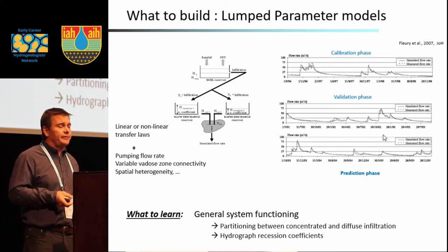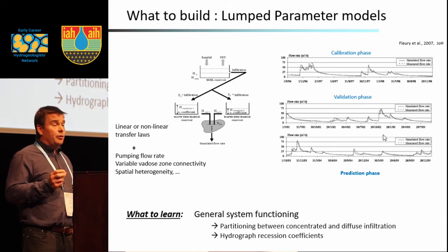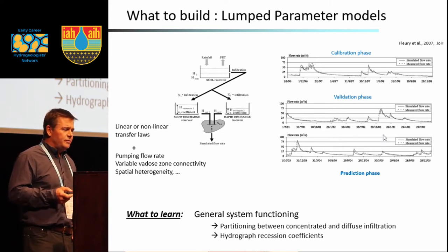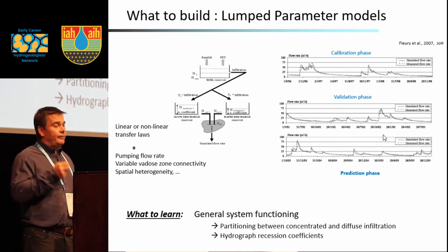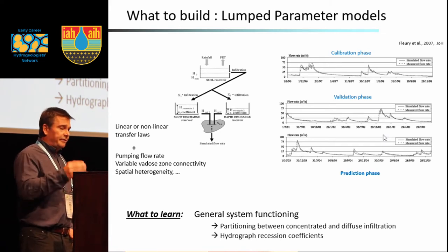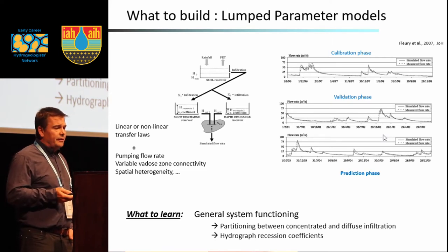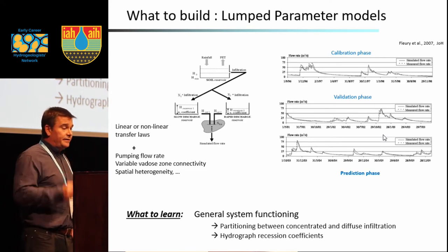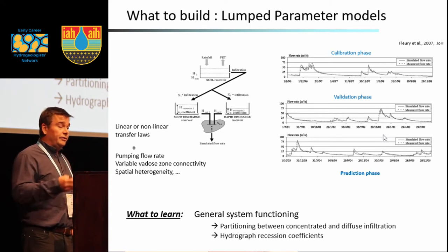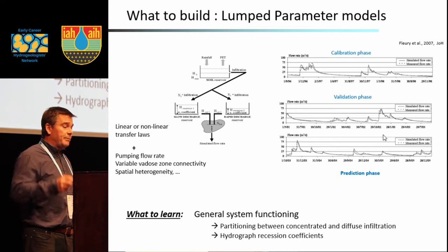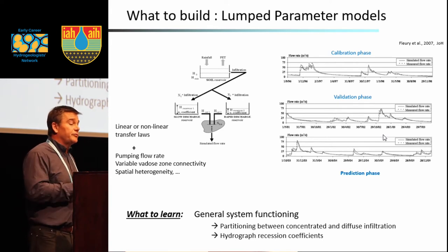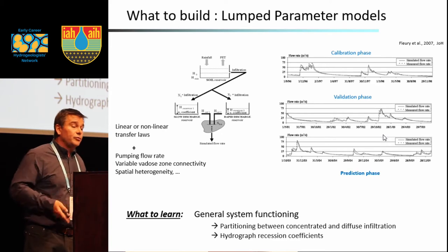Lumped parameter models are simple models with reservoirs taking into account linear or non-linear discharge laws. They can also account for pumping, variable vadose zone connectivity, variable transfer laws, and spatial heterogeneity. These models are used to calibrate spring discharge with validation and prediction periods according to various scenarios such as increased pumping or climate change. They give us information mainly about the partitioning between concentrated and diffuse infiltration and about the hydrograph dynamics.